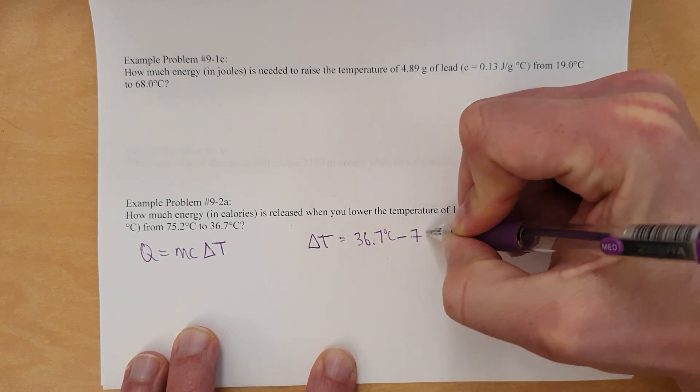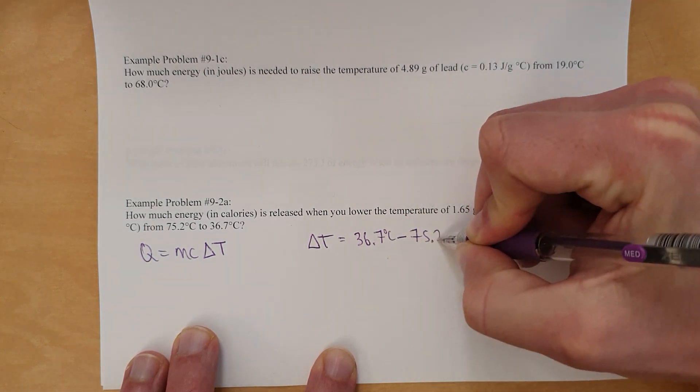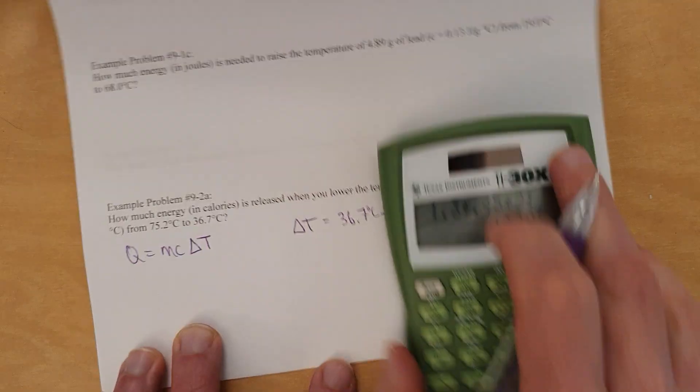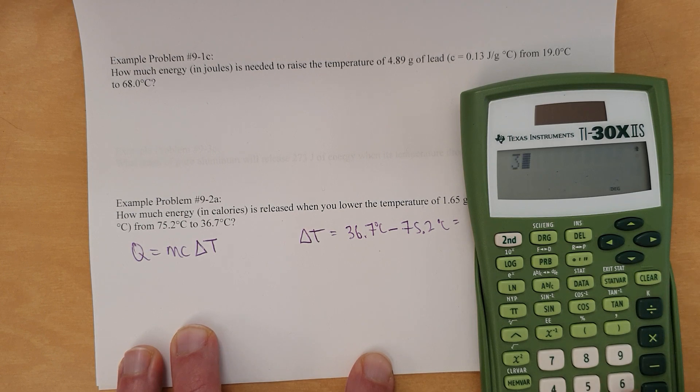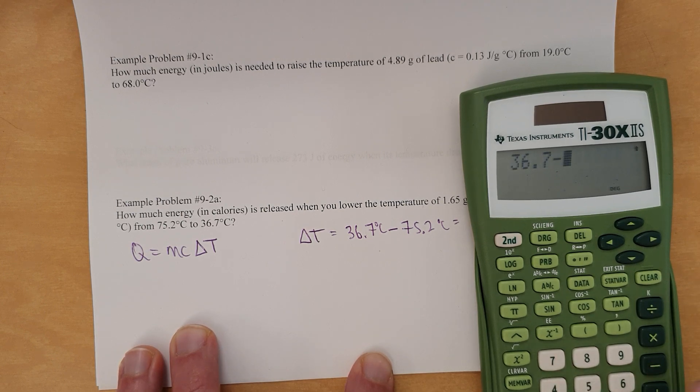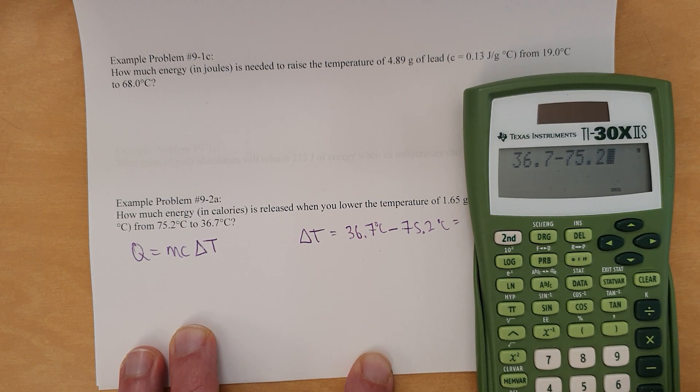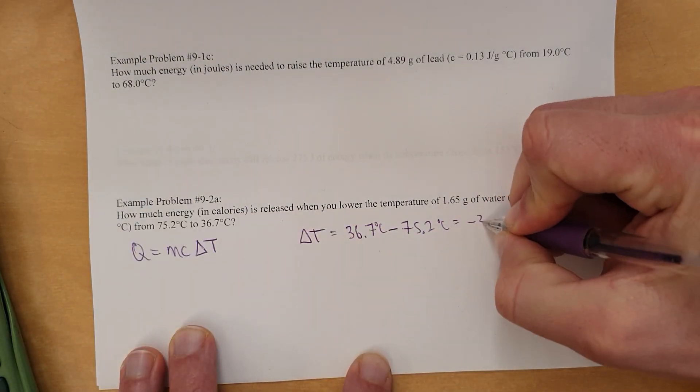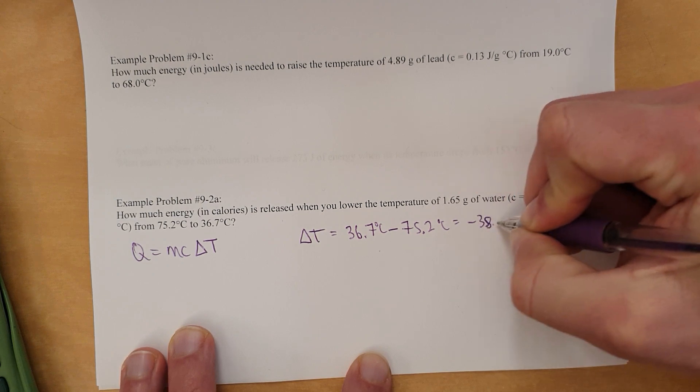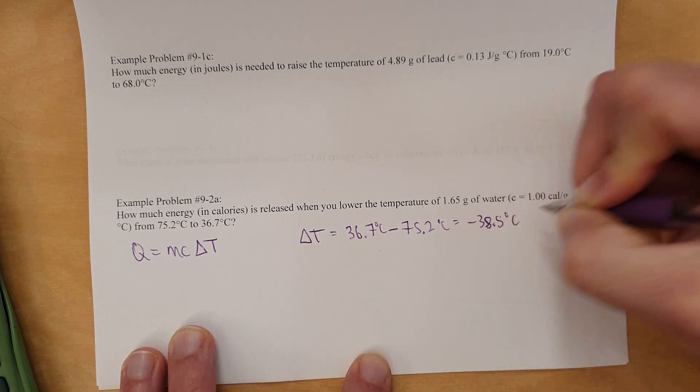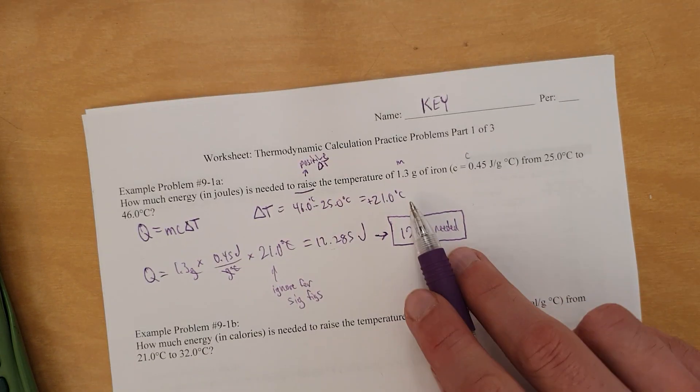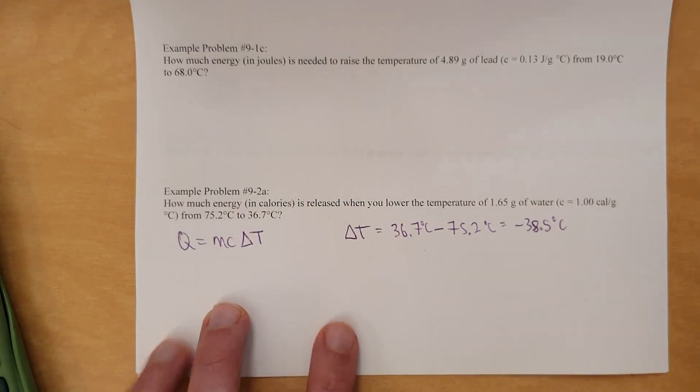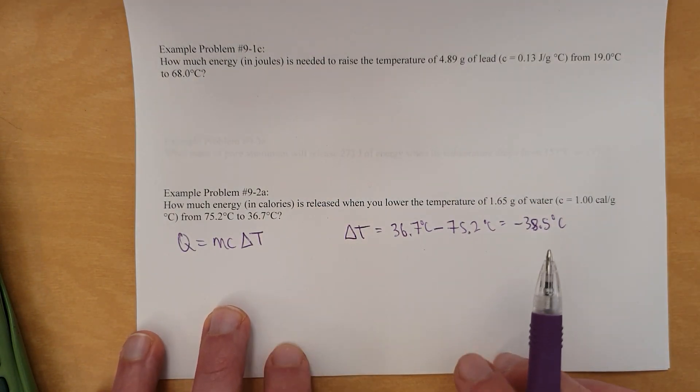So 36.7 degrees Celsius minus 75.2 degrees Celsius. And when we do that, 36.7 minus 75.2 is negative 38.5. Oops, 38.5 degrees Celsius. So that's our delta T right there. We're not going to box that. It's not the final answer. It's the same reason we didn't box delta T up here either. But we are going to use that for a calculation.